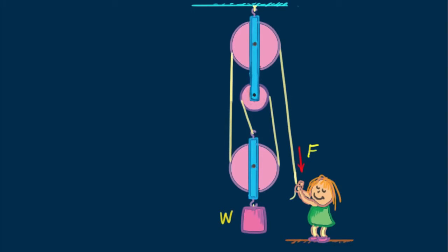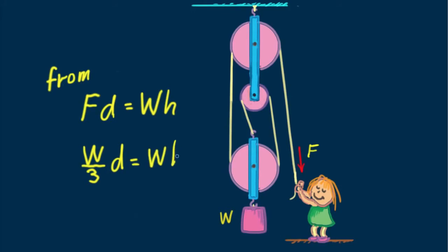This time Nellie has a three-pulley system and again lifts the load by pulling downward. How many strands support the load? Counting them, we see it's three. Three strands supporting the load means the tension in the rope is W over 3. From F times D equals W times H: W over 3 times D equals WH, so H equals one-third D. For every 30 centimeters of downward pull, Nellie raises the load 10 centimeters. For lifting heavy loads like an automobile engine, even more complicated pulley arrangements such as a chain hoist may be necessary.